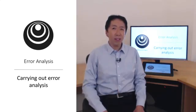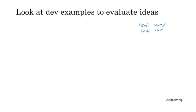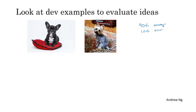Let's start with an example. Let's say you're working on your cat classifier and you've achieved 90% accuracy, or equivalently 10% error on your dev set, and let's say this is much worse than you're hoping to do. Maybe one of your teammates looks at some of the examples that the algorithm is misclassifying and notices that it is miscategorizing some dogs as cats.